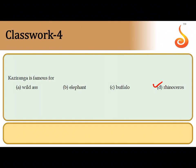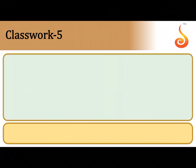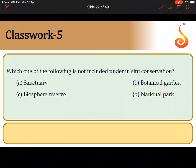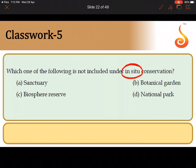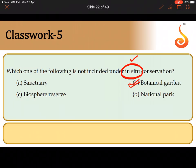The fifth question asks which is not included under in-situ conservation. In-situ conservation means conserving an organism in its natural habitat. A botanical garden is not in-situ conservation because in a botanical garden you take the plant away from its natural habitat and conserve it in an artificial setup. So the odd one out is option B, botanical garden — it is ex-situ conservation, not in-situ.